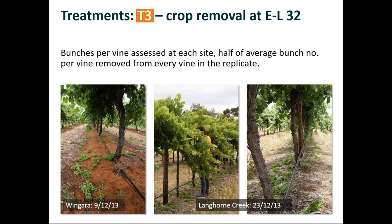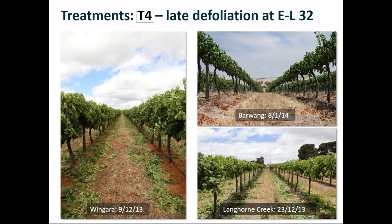The fourth treatment was a late defoliation treatment - the idea being to reduce the amount of carbohydrate available without impacting the amount of crop. This was a summer hedging where we tried not to impact the fruiting zone itself but to remove around about half the canopy by cutting the canopy back towards the fruiting zone. You can see photographs there of the amount of leaf that was removed from those sites.